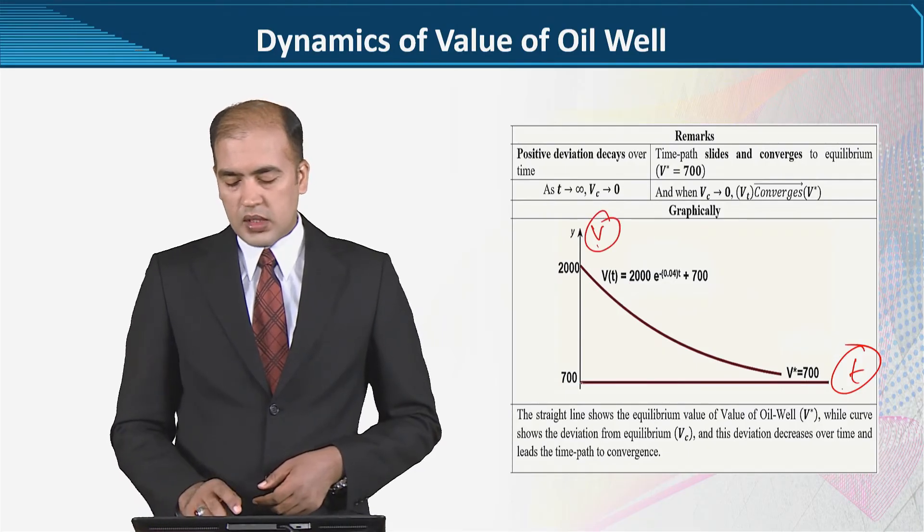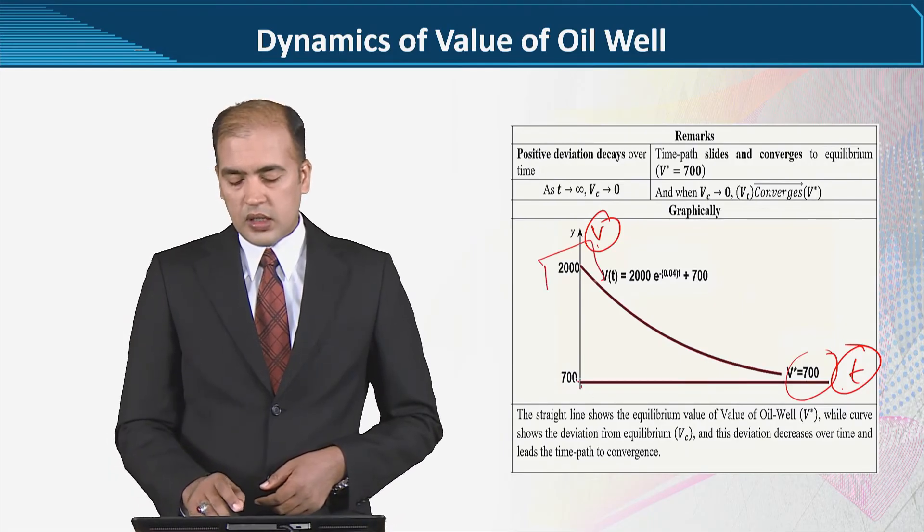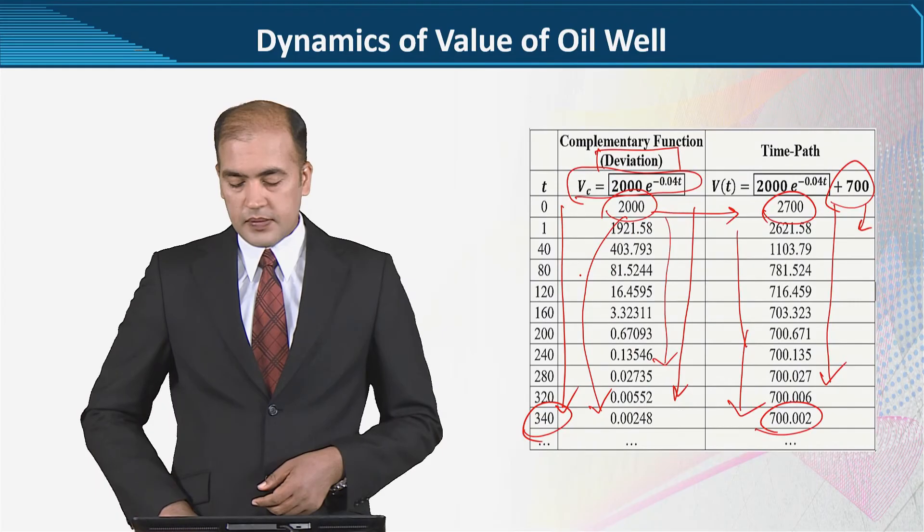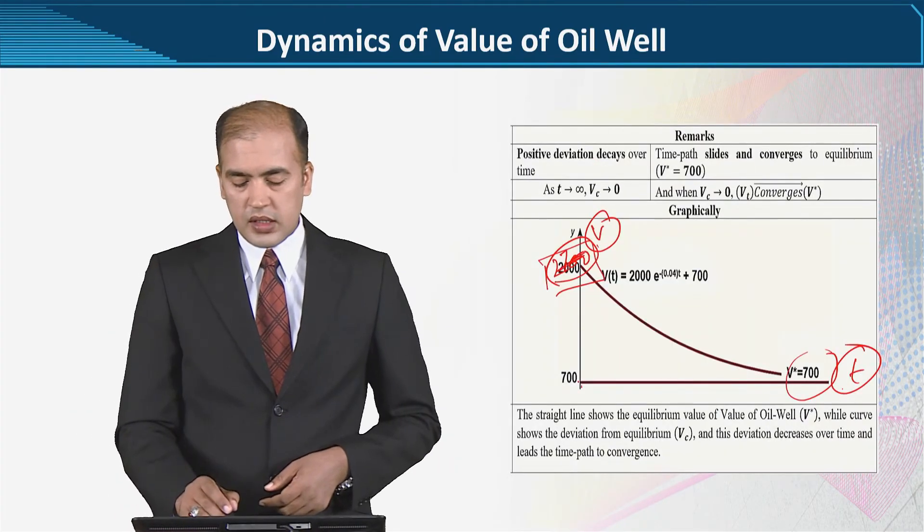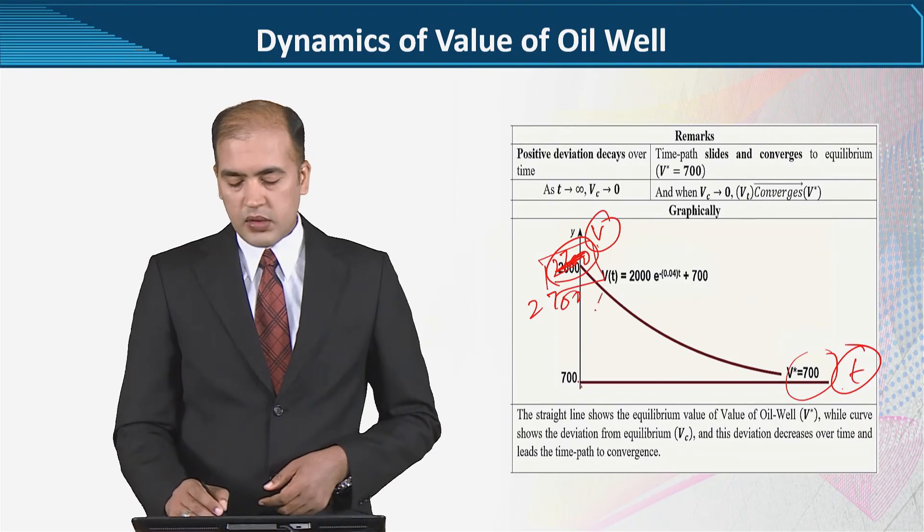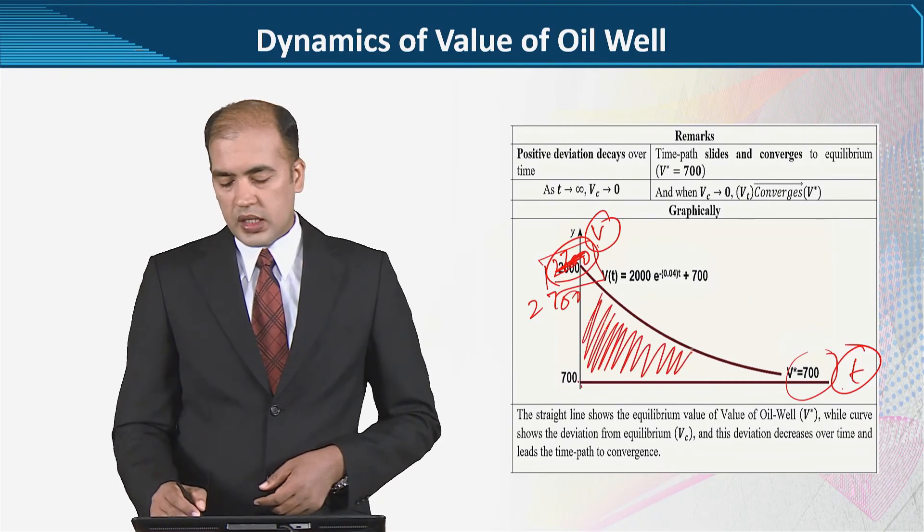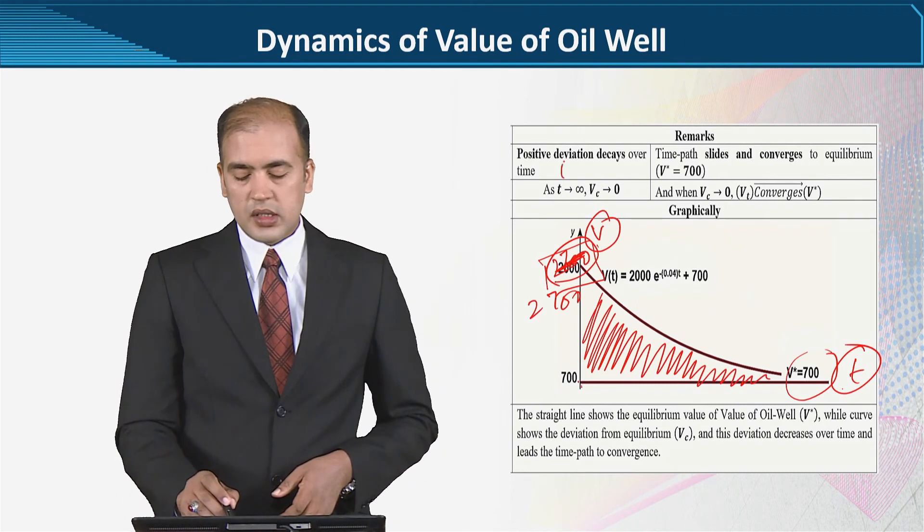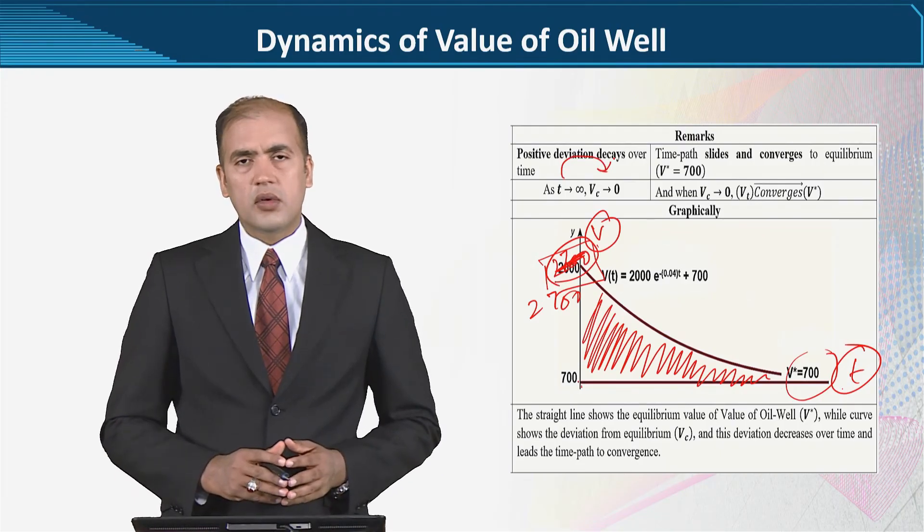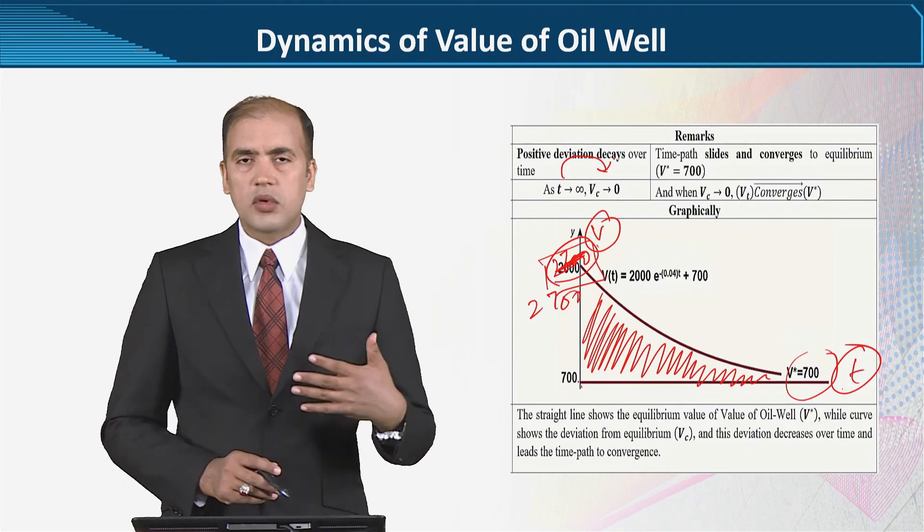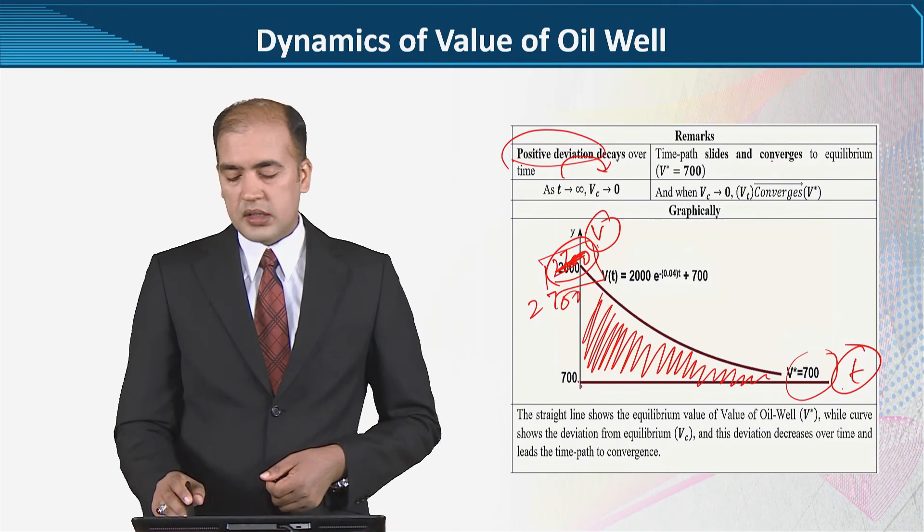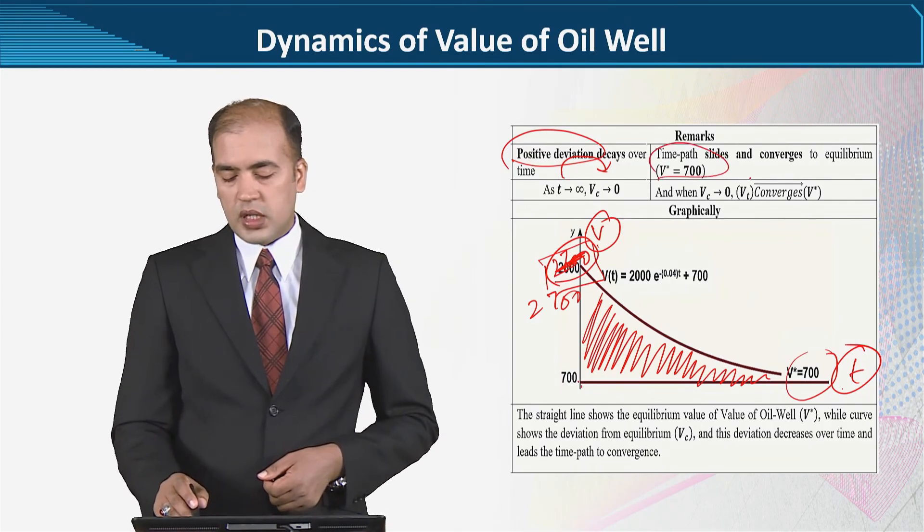Diagrammatically हम देख रहे हैं के यहां पर what's happening. Value of the oil well depends upon time जिसकी equilibrium value है 700. When we start, it will start from 2700, which was the initial condition. And 2700 से it will converge towards the equilibrium because आप देखेंगे deviation का component कम होता जा रहा and it is coming towards this equilibrium. So यह phenomenon वही है के जैसे जैसे time गुजरा वैसे वैसे value of the oil well, उसका जो complementary function है वो reduce होता गया, deviation काम होती गई. And यह positive deviation थी और उसके बाद time path slides and converges towards the equilibrium.